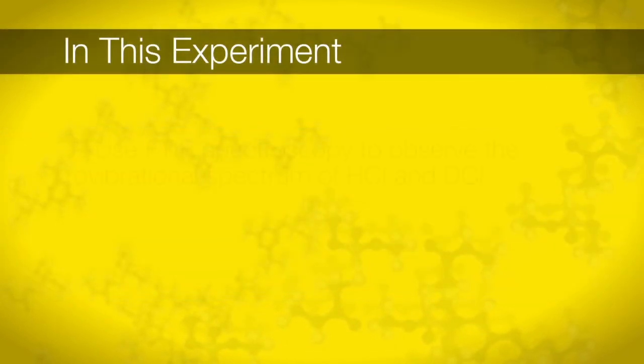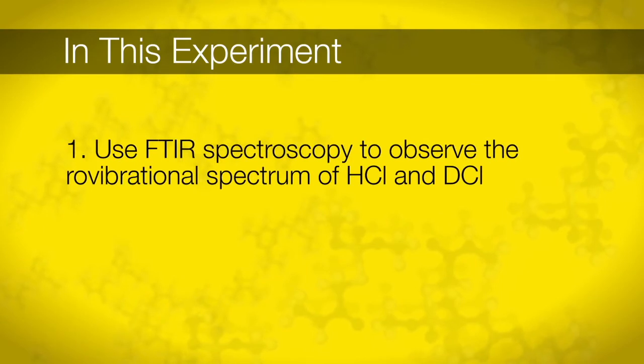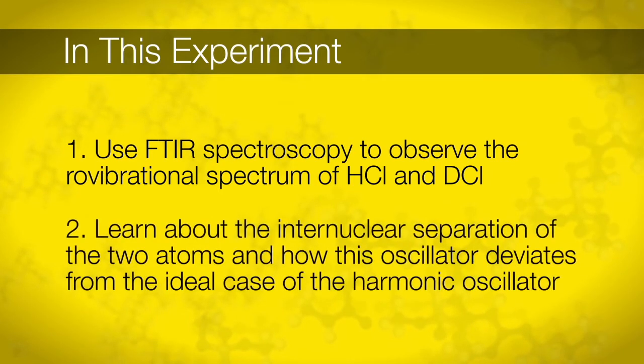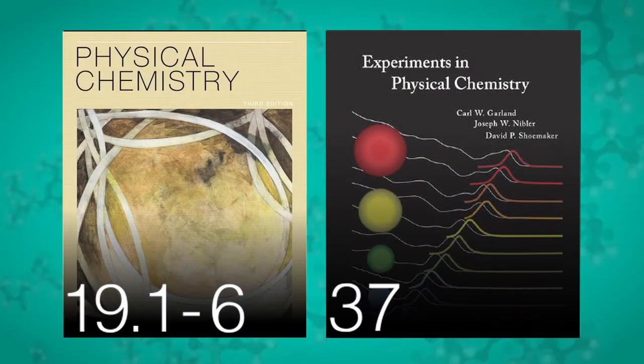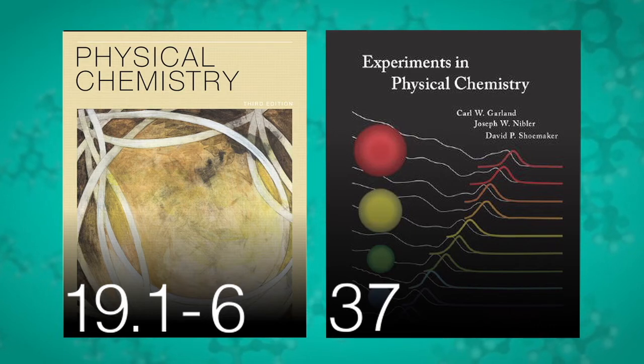In this experiment, we'll use FTIR spectroscopy to observe the rovibrational spectrum of HCl and DCl. From analysis of the acquired spectrum, you will learn about the internuclear separation of the two atoms and how this oscillator deviates from the ideal case of a harmonic oscillator. Before coming to lab, please read Engel and Reid 19.1-19.6 and Experiment 37 in the Garland eBook.